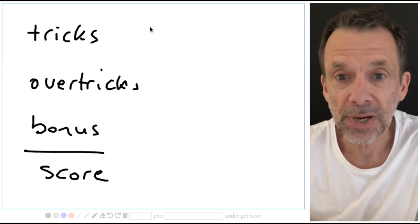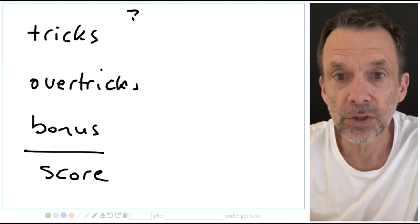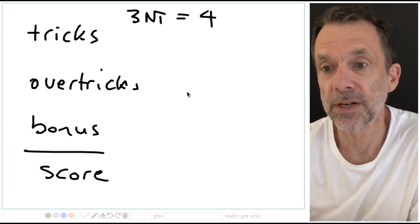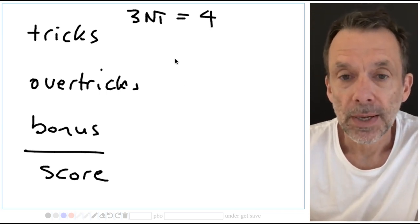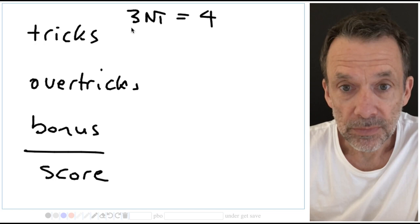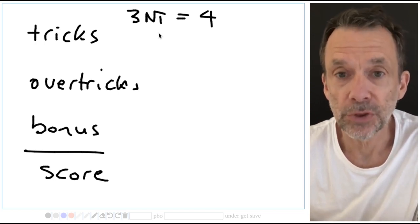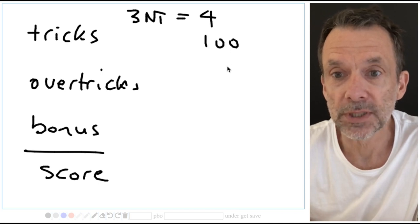In the hand I just played I was in a contract of three no trumps and I made 10 tricks. So three no trumps making four. Three no trumps, points for the tricks, 40 for the first trick in no trumps, then 30 plus 30 equals 100 trick points.